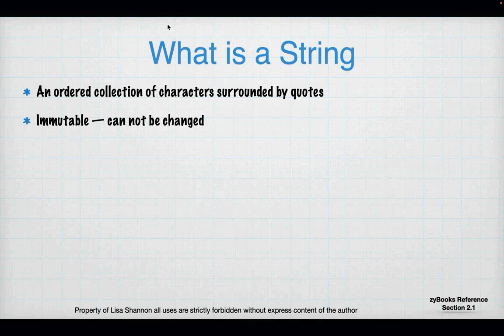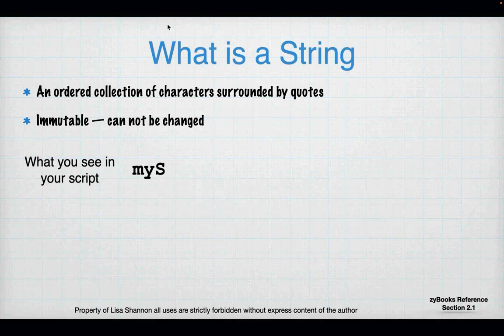So what is a string? A string is an ordered collection of characters surrounded by quotes. A character can be a number, a space, a tab, or anything, as long as it's surrounded by quotes. The other thing about a string is that it is immutable, which means it can't be changed. Once you create a string you cannot change that string. You can create another string from that string and have Python do the changes while it's doing the creation, but you can't actually change a string once you've created it.